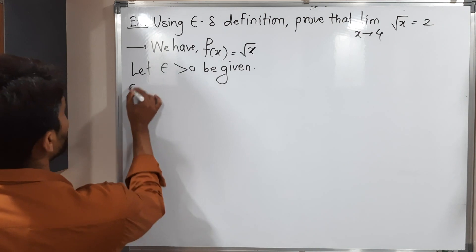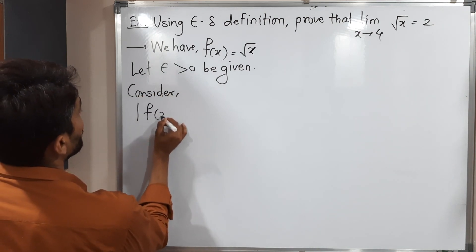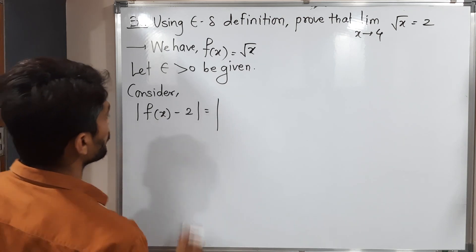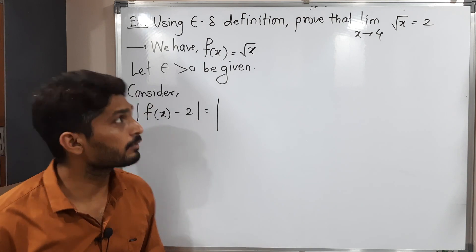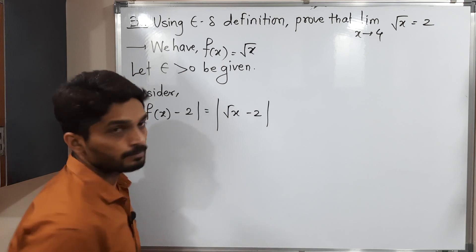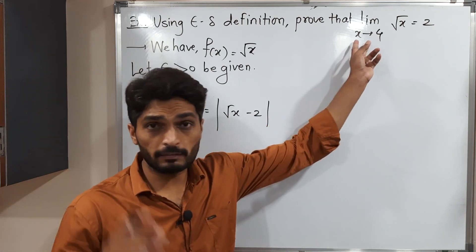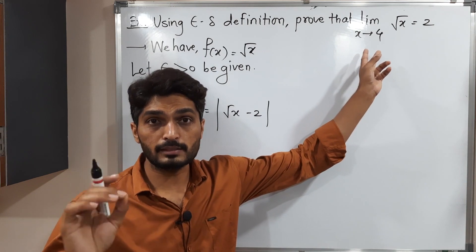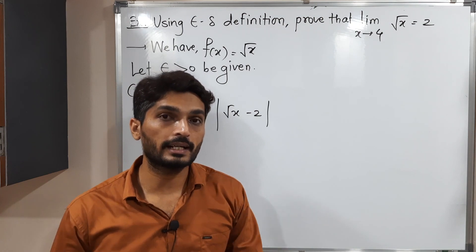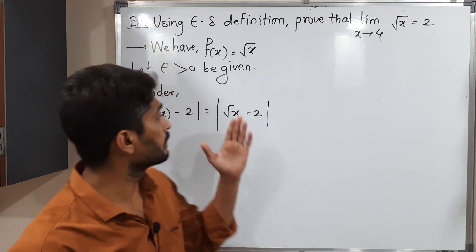Let us consider |f(x) - limit|. The limit here is 2. So this is equal to |root x - 2|. In the definition, we get |x - 4| < delta, since x tends to 4. So you cannot find a direct relation between |root x - 2| and |x - 4|. It's difficult to select delta directly.